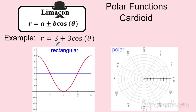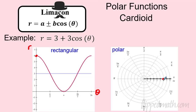Let's start with the first example. Rather than just plotting points, today we'll look at what the function looks like on both the rectangular graph and the polar graph. On the rectangular graph, the angle is on the horizontal axis and r is on the vertical axis. For 3 + 3cos(θ), the midline is at 3 and the amplitude is 3. An easy starting point: at zero, r equals 3 + 3cos(0) = 6.